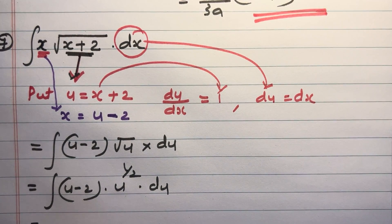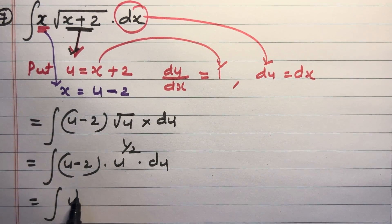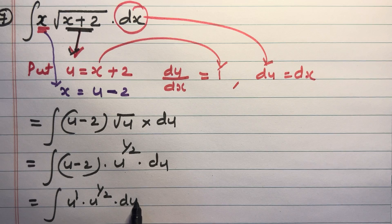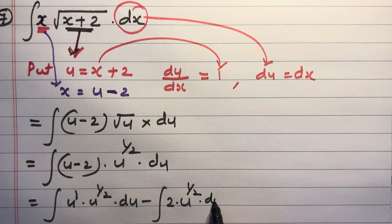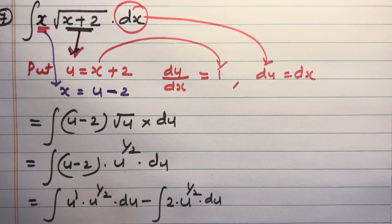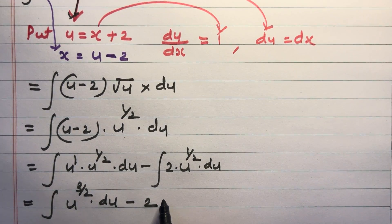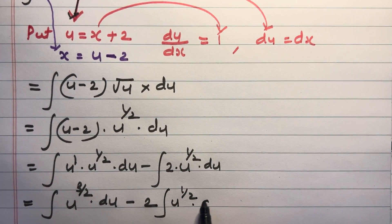Opening the bracket: integral of u raised to 1 into u raised to 1 by 2, du, minus integral of 2 into u raised to 1 by 2, du. That is integral of u raised to 3 by 2, du, minus 2 times integral of u raised to 1 by 2, du.